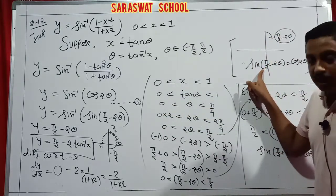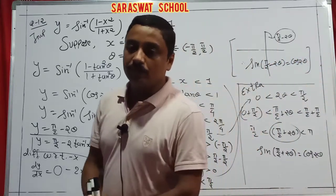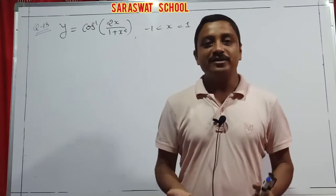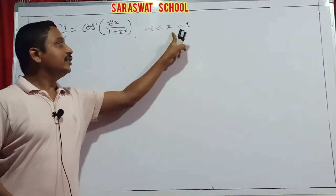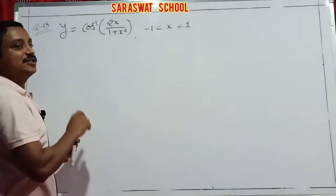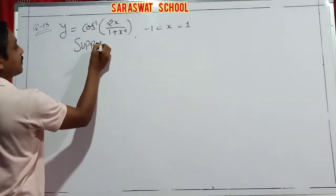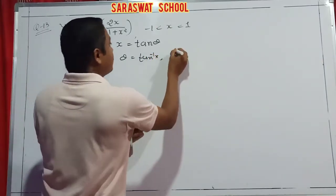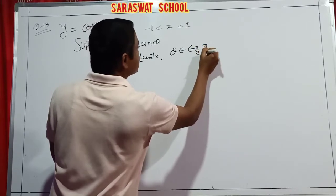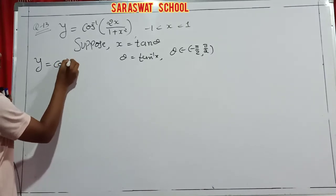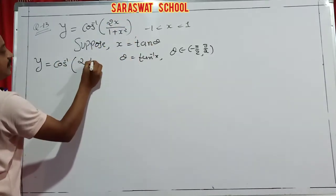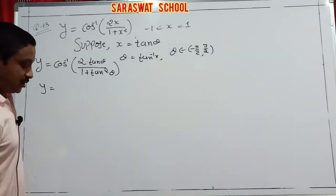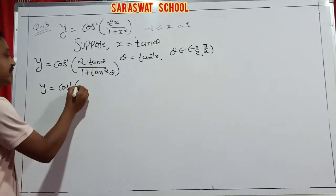Continue. Next numerical: y = cos⁻¹(2x/(1+x²)) with condition -1 < x < 1. You already know: x = tan θ suggestion. Suppose x = tan θ, so θ = tan⁻¹x, θ ∈ (-π/2, π/2). So y = cos⁻¹(2tanθ/(1+tan²θ)). This total value is (2tanθ)/(1+tan²θ) = sin 2θ. So y = cos⁻¹(sin 2θ).